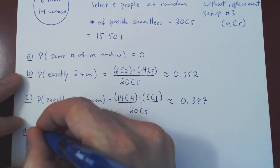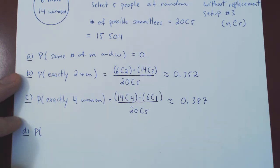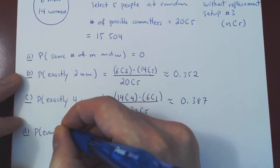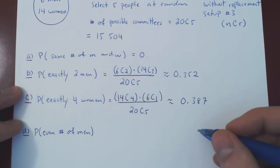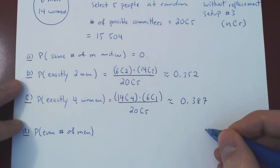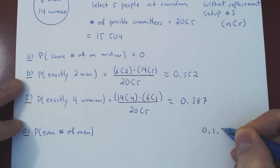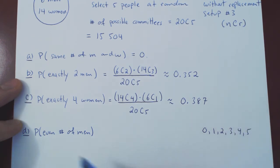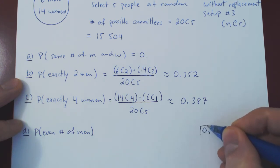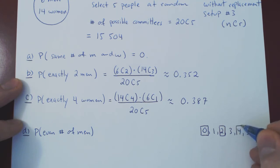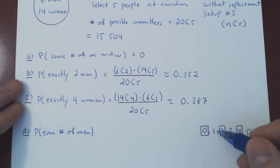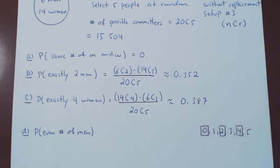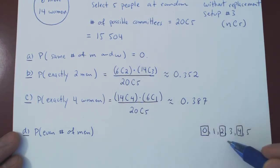Question D: what is the probability of a committee with an even number of men? Think of all possibilities: there could be 0, 1, 2, 3, 4, or 5 men. The event 'an even number of men' means either 0, or 2, or 4 men. When we say 'or,' we add. We have a partition of our event into three sub-events: exactly 0 men, or exactly 2 men, or exactly 4 men.